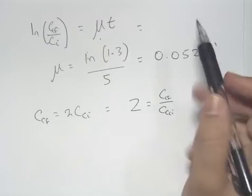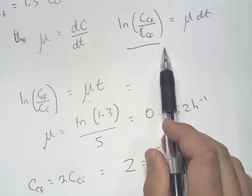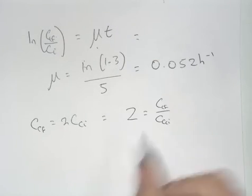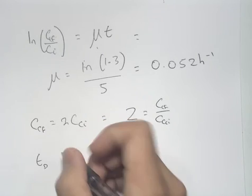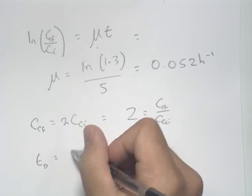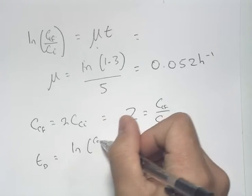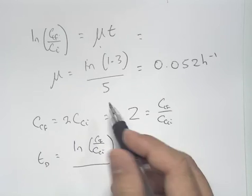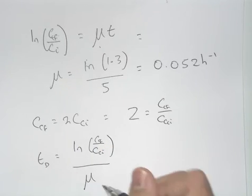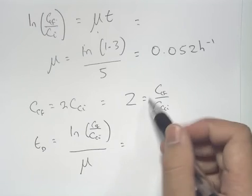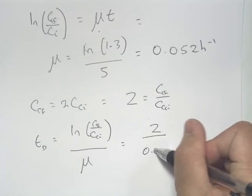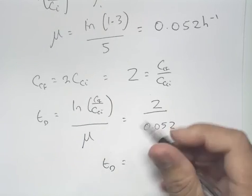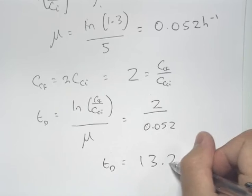We can rearrange our above equation in terms of time. So we can then write TD equals log of CCF over CCI, our final over initial concentration, and we can divide that by the specific growth rate, μ. Using our ratio, we get 2 over 0.052, and this gives us a doubling time of 13.2 hours.